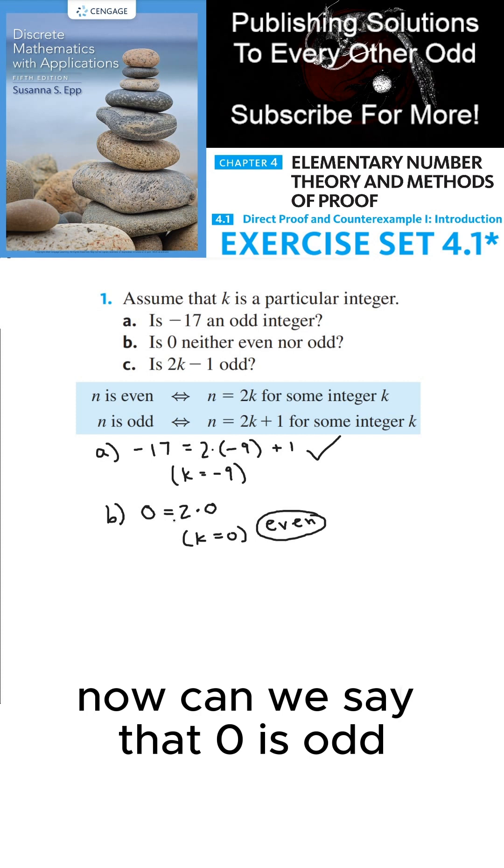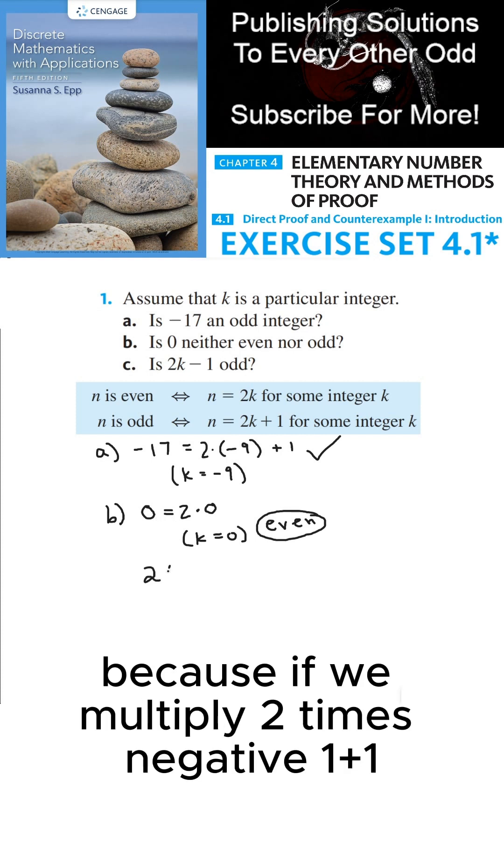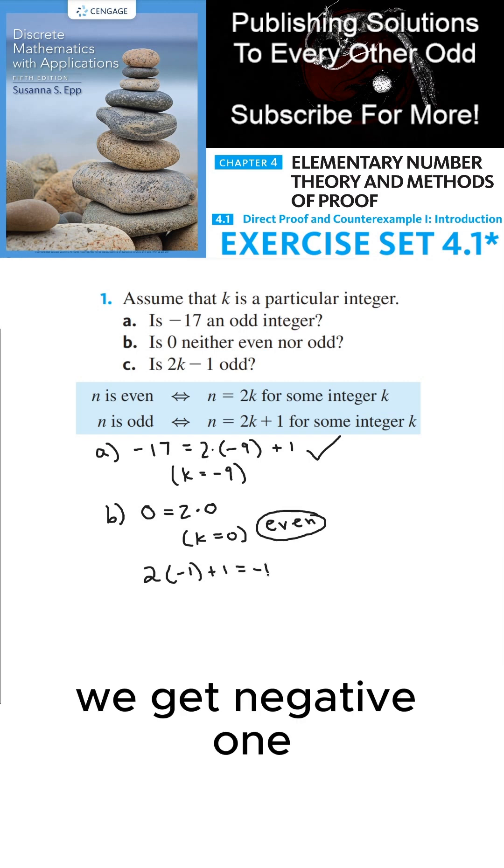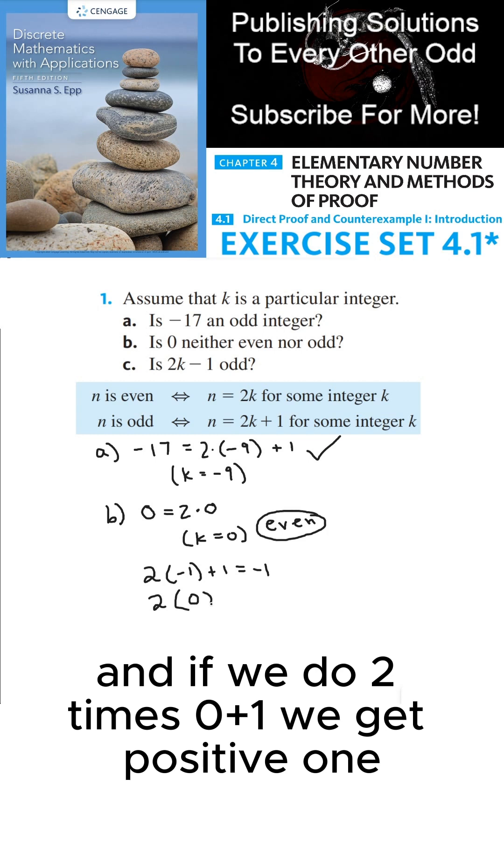Now can we say that 0 is odd? Well, not quite, because if we multiply 2 times negative 1 plus 1, we get negative 1. And if we do 2 times 0 plus 1, we get positive 1.